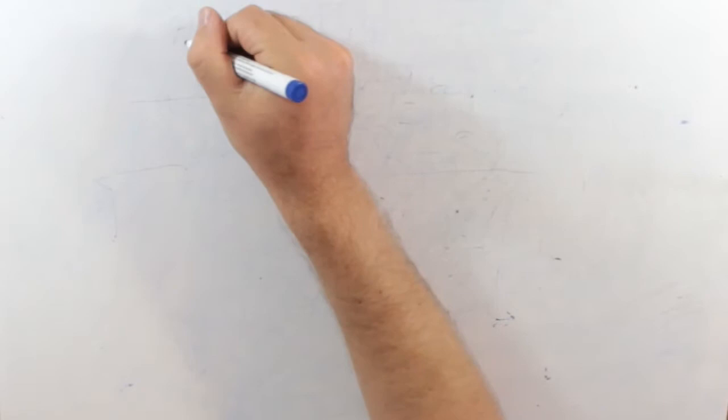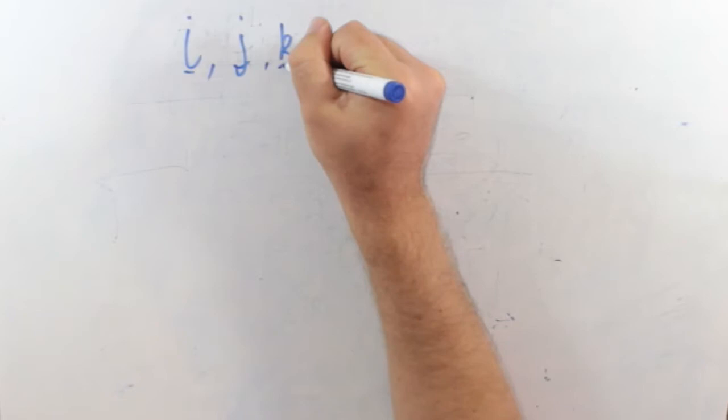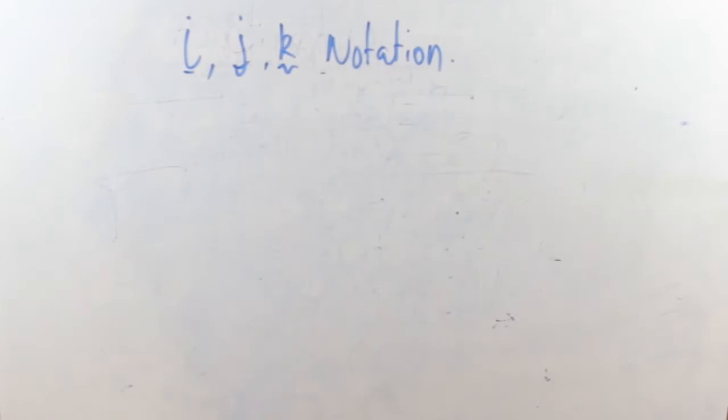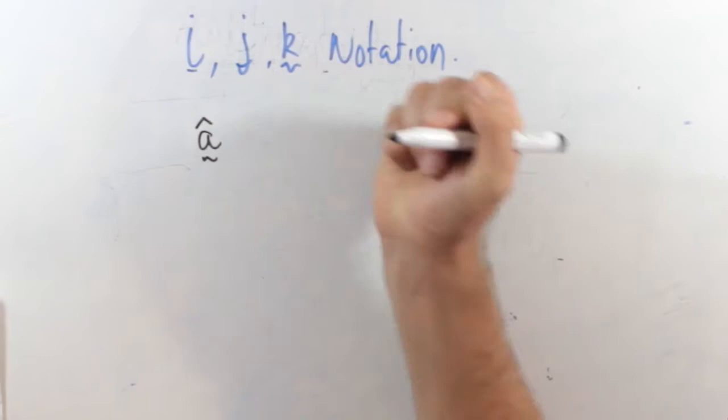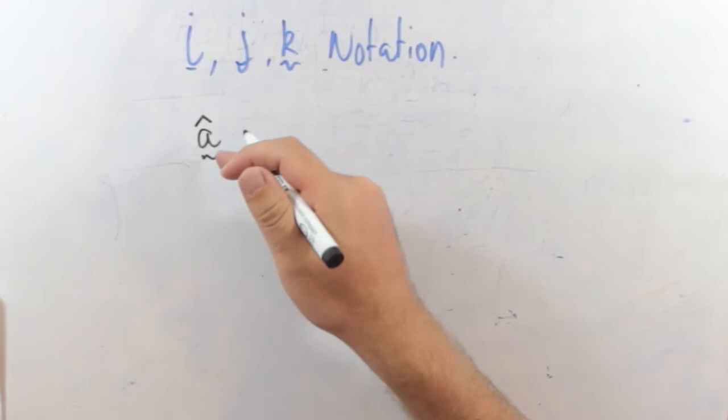All right, today we're going to continue on with vectors and talk about the i, j, and k notation. But before we do that we need to understand what a unit vector is. So if I have a vector a, we indicate a unit vector with a little hat. I don't know what you call that thing, I've forgotten, but I call it hat. I say a hat.